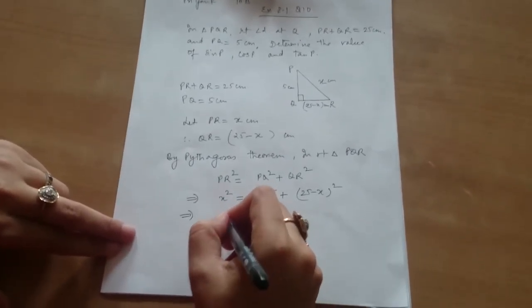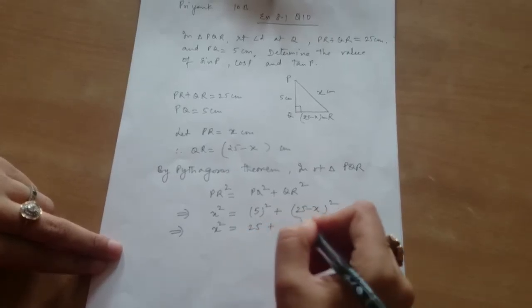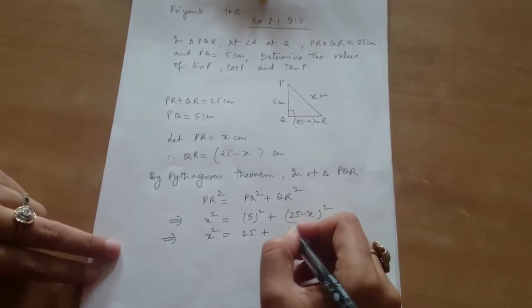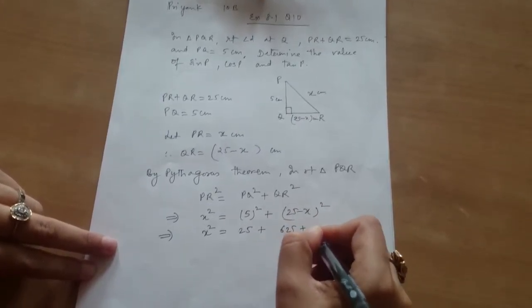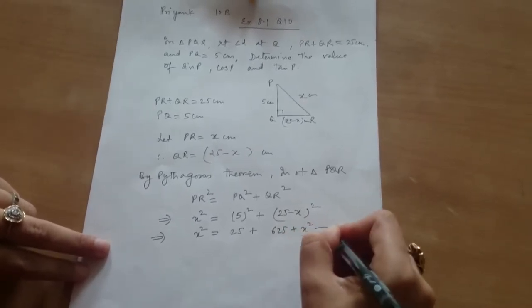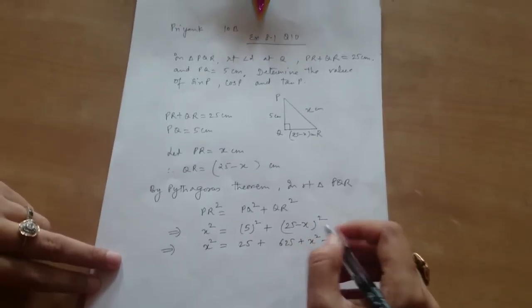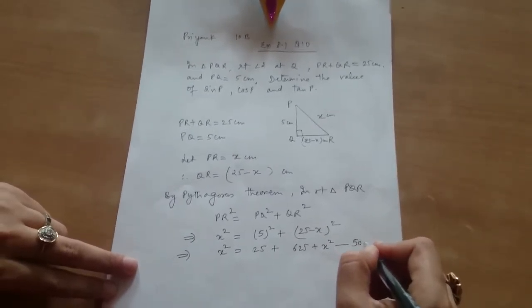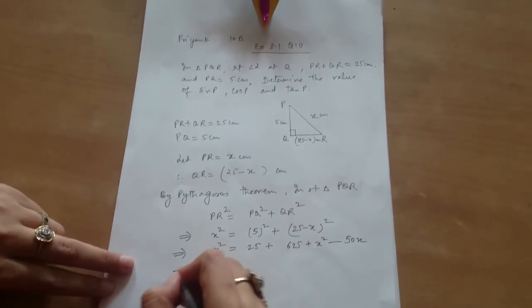X square equals 25 plus 25 square. 25 square is 625 minus X square minus 2 into 25 into X, that is 50X.